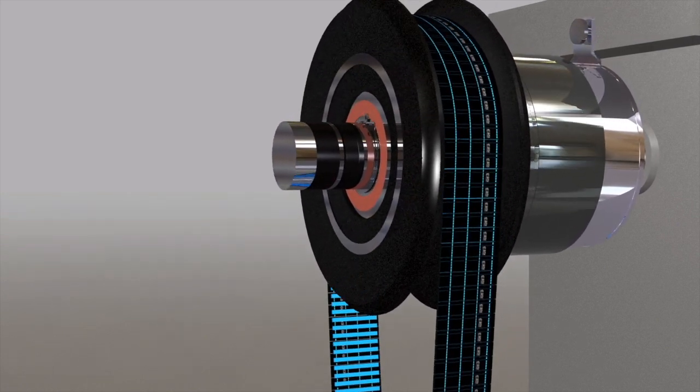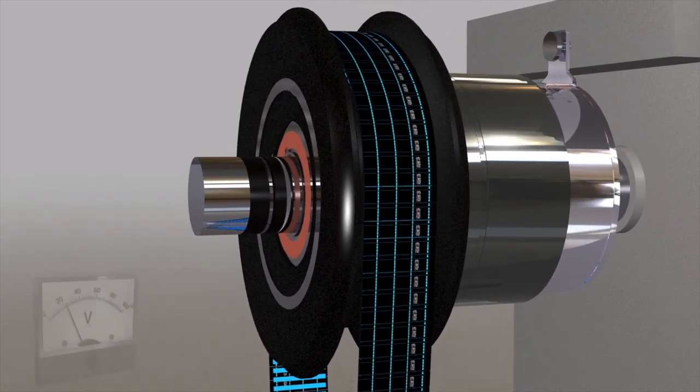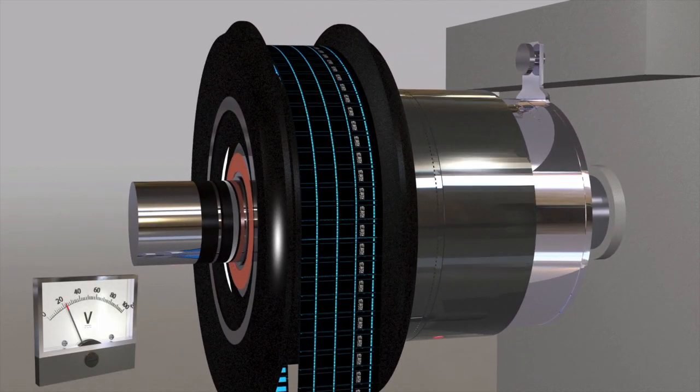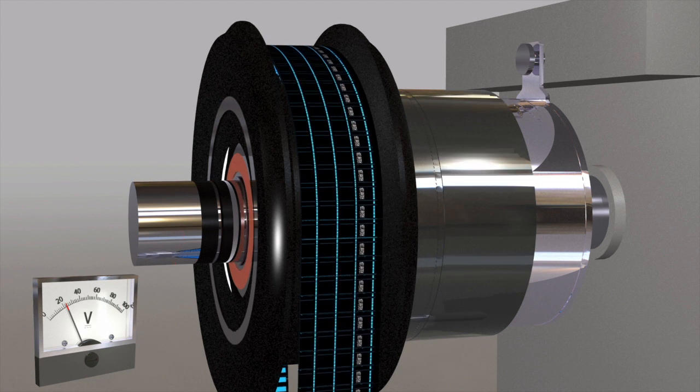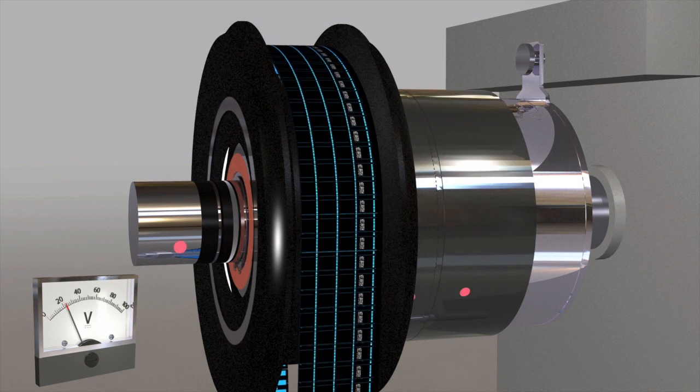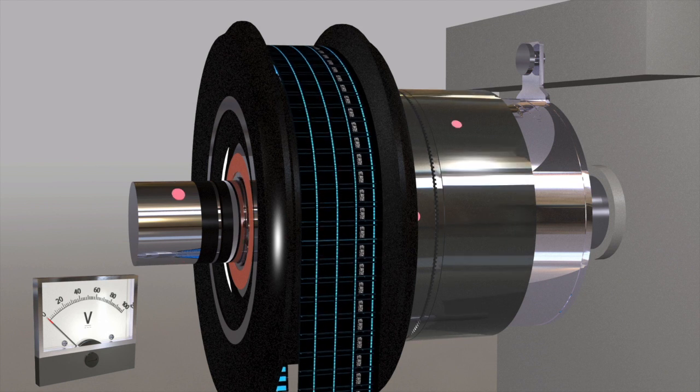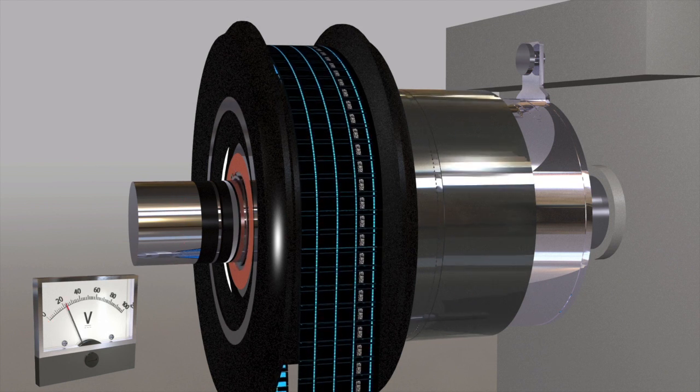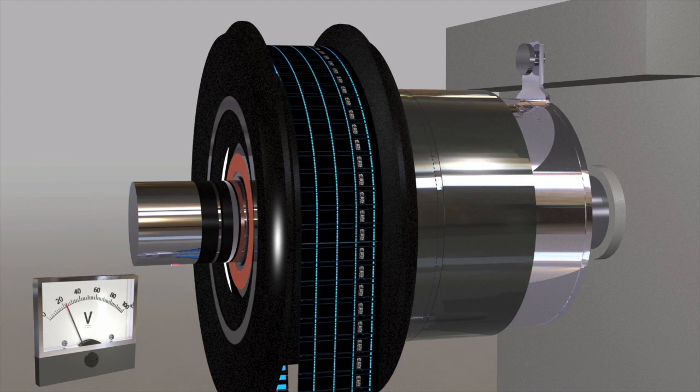Since torque is transmitted without any slippage, torque transfer is 100% efficient. Tooth clutches can only be engaged at speeds under 50 RPM, but should not be engaged at 0 RPM to avoid the potential of a tooth point engagement.